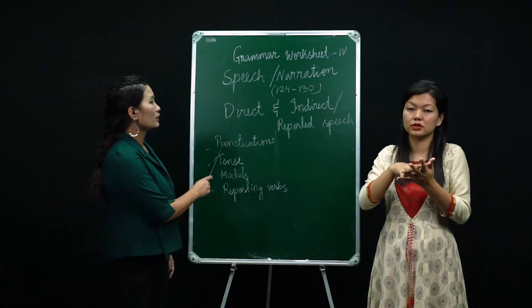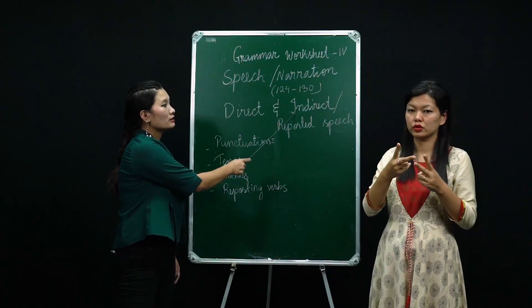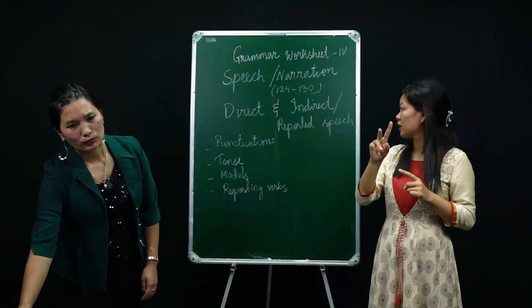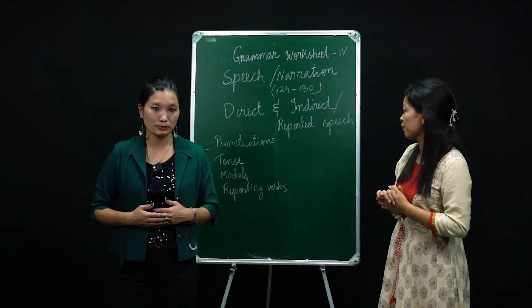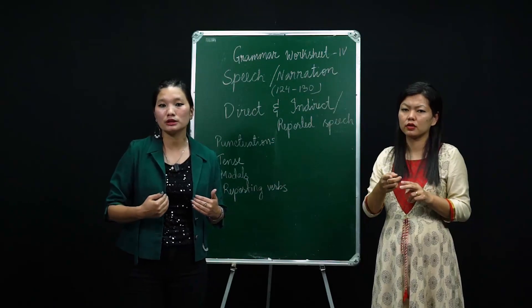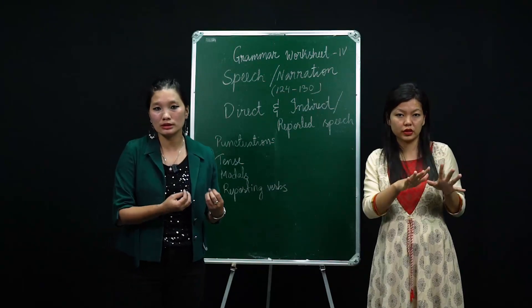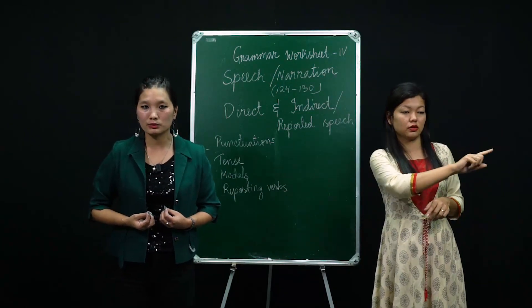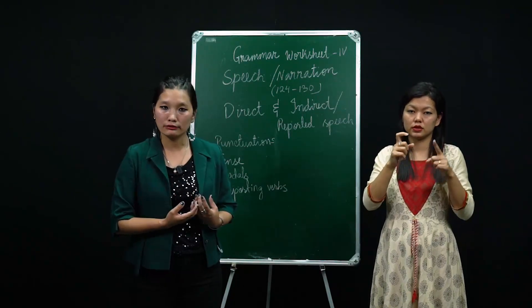We will be doing direct and indirect speech. We have two types of speech: direct and indirect speech. Indirect speech is also called reported speech. It is not the direct word that the speaker originally spoke — if I tell you something and you go and report my words to some of your friends, that is indirect speech. Reporting someone's original words to another person or a third person is called reported speech or indirect speech.